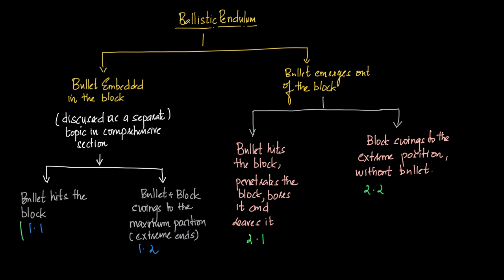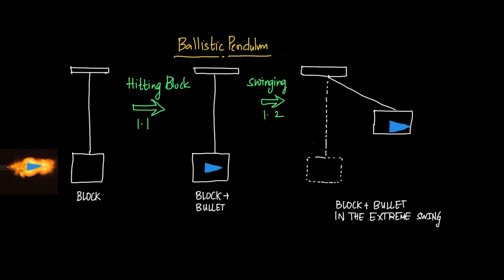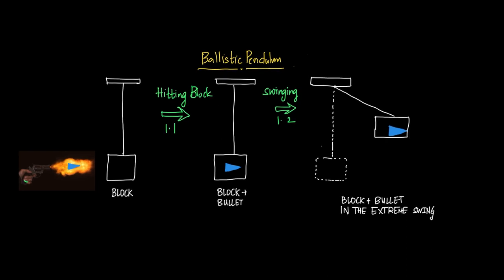Let's start with case 1.1. A bullet comes from a gun and hits the block, penetrates it, and becomes embedded inside. Some velocity is transferred to the block, which starts swinging with the bullet inside. We consider the bullet and block as a system, and the net external force acting on this system is zero.